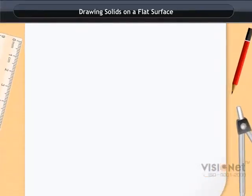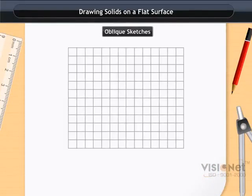Drawing Solids on a Flat Surface. Oblique Sketches. Let us draw on a geoboard or grid paper a cube having dimension 4 x 3 x 3.